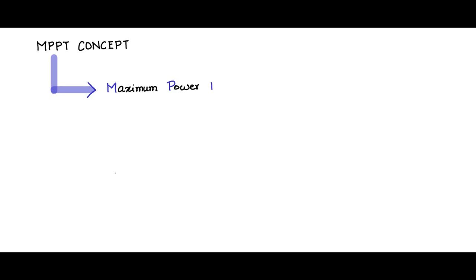MPPT stands for Maximum Power Point Tracking. In the case of photovoltaic modules, there is one single operating point at any given point in time where maximum power can be drawn. We need to locate this point, track this point, and see that the operating point of the PV module is always at that point or hovering near and around that point. The process of always trying to maintain the operating point of the PV panel at the maximum power point is called maximum power point tracking.